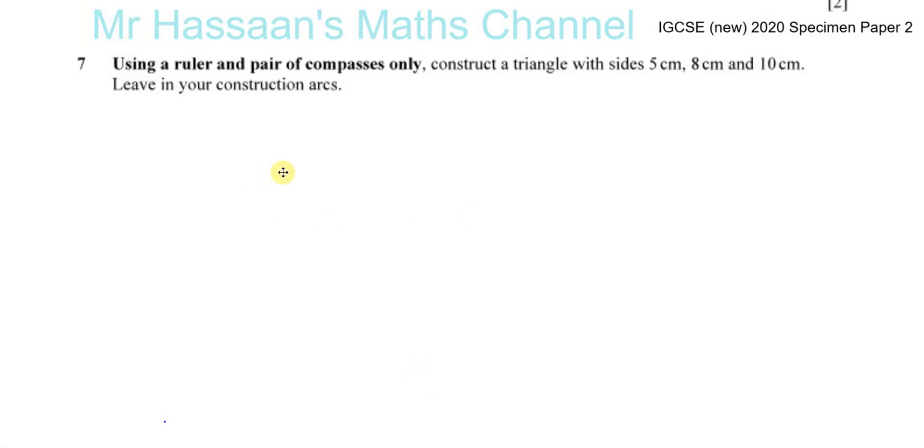Question number seven from the specimen paper for the 2020 IGCSE new syllabus. The topic of loci has been taken out of the syllabus, which was there previously, but the topic of construction is still there. So we still have to have the skills of using the protractor and the compass and rulers and constructing triangles.